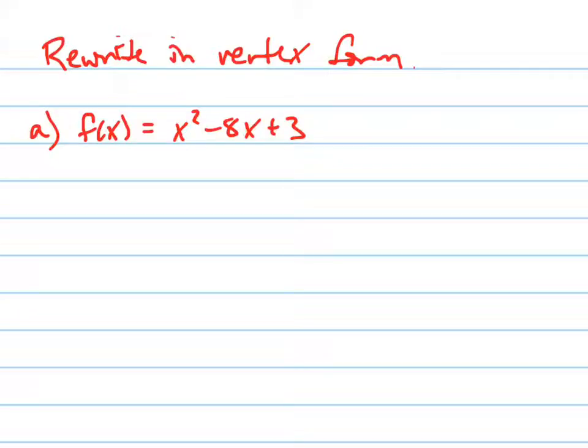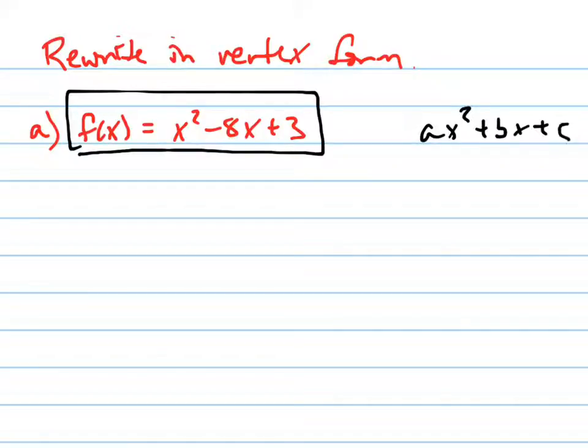Now we're going to rewrite these standard form equations into vertex form. Notice that these are in standard form, which means they're in the form AX squared plus BX plus C. Now this form is nice for a lot of things, but it's also not the most ideal form for other reasons.